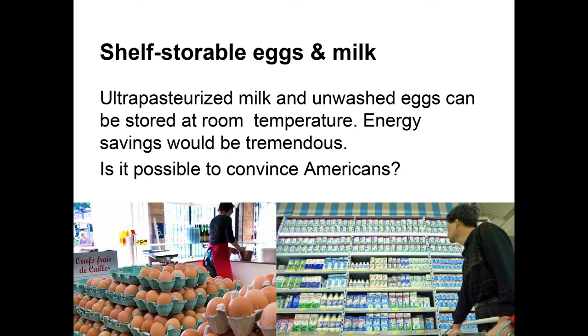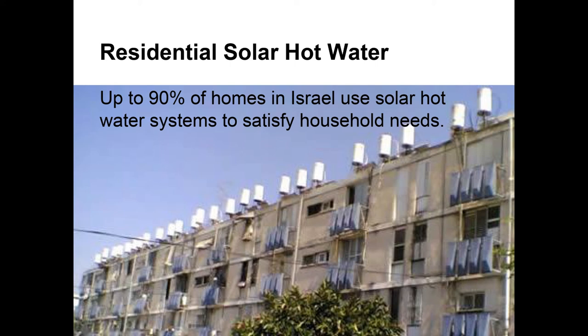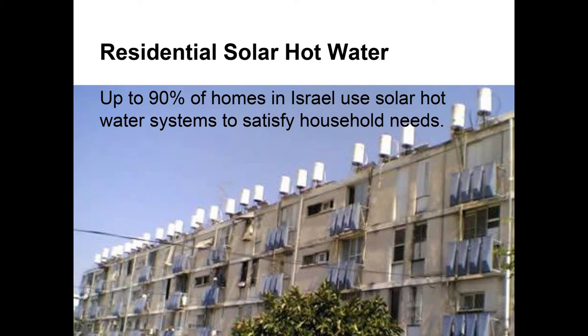Residential hot water from the sun — solar hot water — is another option that hasn't really taken off in the US. You see it occasionally on roofs and sometimes in larger installations, but usually hot water is created with natural gas, oil, or some other boiler system. A good example of the alternative: about 90% of homes in Israel use solar hot water systems.